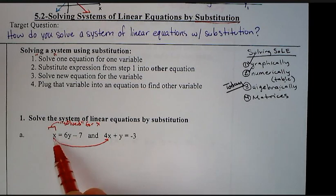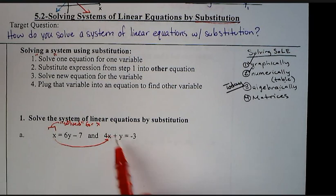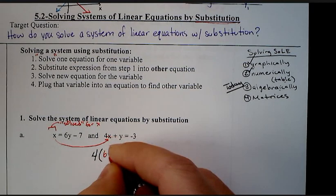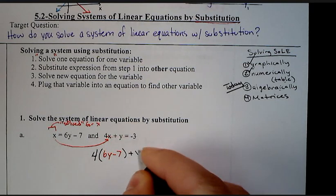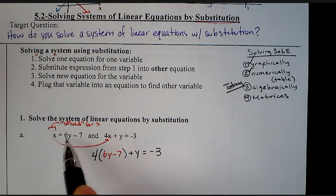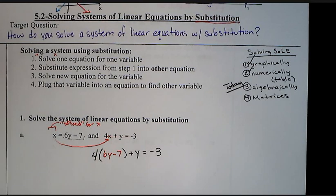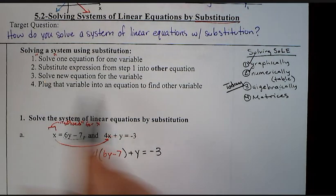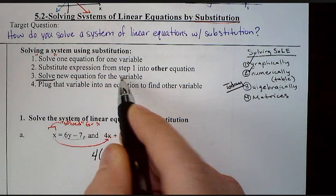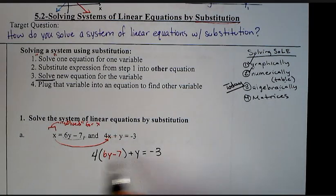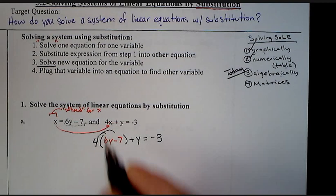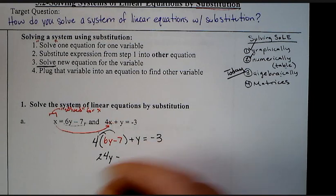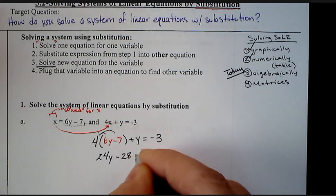So now that it's solved for x, we can substitute this x in for the x's in the other equation. We've solved for one, they're being very nice to us, it's already done for us. Then we substitute this in for here. If x equals 6y minus 7, then anywhere I see an x over here, I can put in 6y minus 7. So it's 4 times 6y minus 7, plus y, and that equals negative 3. All I did was I plugged this in for x.